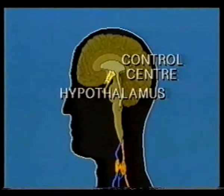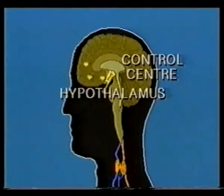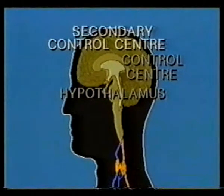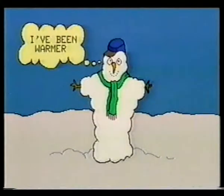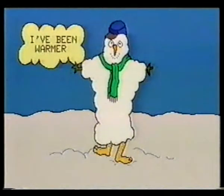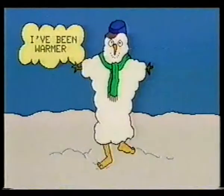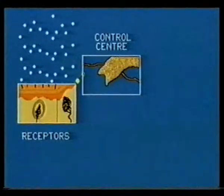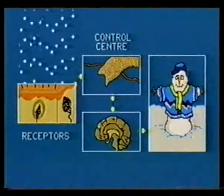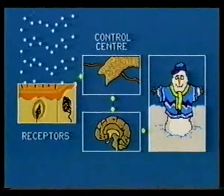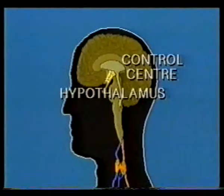For example, the hypothalamus may send a message to the cerebrum. The cerebrum can be considered as a secondary control center. Conscious thoughts may be formed, and the cerebrum directs complex arrays of secondary effectors. The final response might be stamping the feet, or this more complex homeostatic process might end with putting on a sweater.